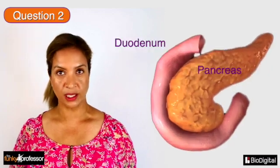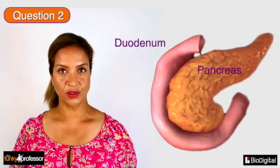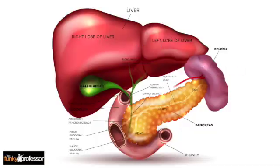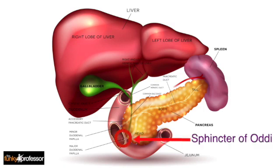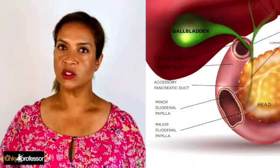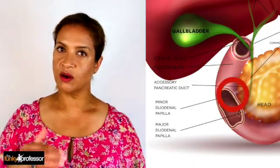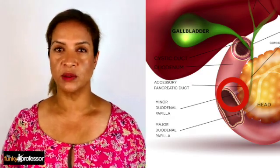Question 2: the pancreas empties its contents via the pancreatic duct, which connects with the second part of the duodenum. It attaches to the posterior medial aspect of the second part of the duodenum, which is guarded by the sphincter of Oddi. There is also a secondary duct, also known as the accessory pancreatic duct, which opens just a little bit higher up, also on the second part of the duodenum.